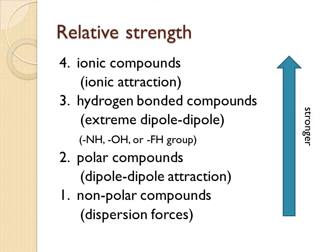An extreme example of dipole-dipole interaction is hydrogen bonding. If a compound has an OH group, an NH group, or an FH group, those dipoles are so strong that they're classified as another category — really, really strong dipole-dipole interactions called hydrogen bonds. Hydrogen does not attract electrons very well, so the end with hydrogen is very positive, while the end with oxygen, nitrogen, or fluorine is very negative, giving a very enhanced dipole.